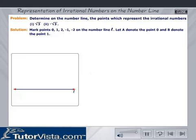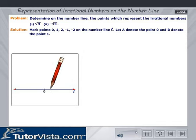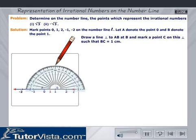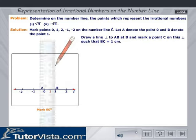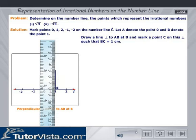Solution: Mark points 0, 1, 2, minus 1, and minus 2 on the number line L. Let A denote the point 0 and B denote the point 1. Draw a line perpendicular to AB and mark a point C on this perpendicular such that BC equals 1 cm.